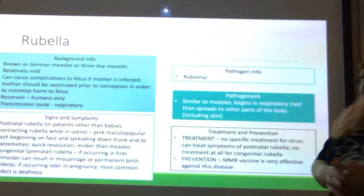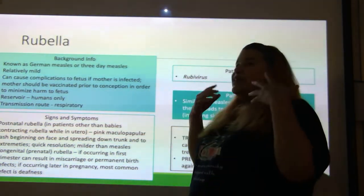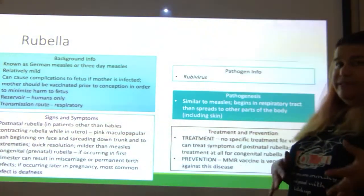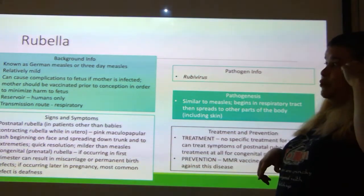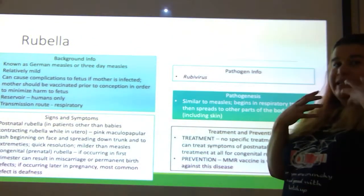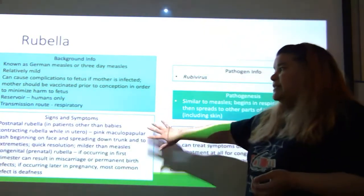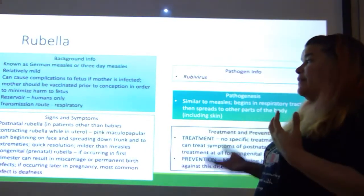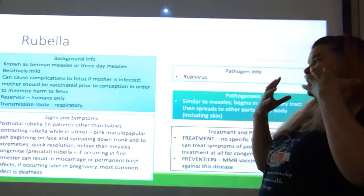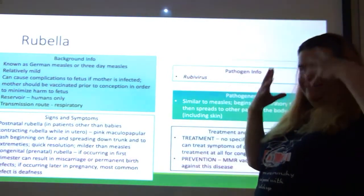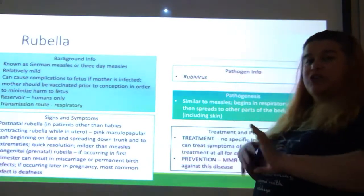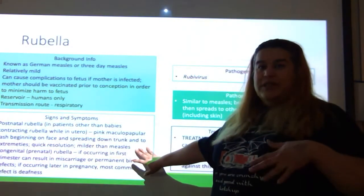Rubella — also known as German measles or three-day measles. Compared to measles, it is relatively mild. However, it can cause complications to a fetus if a mother is infected, so the mother should be vaccinated prior to conception to minimize harm. The reservoir is humans only and transmission is respiratory. Postnatal rubella produces pink maculopapular rashes beginning on the face spreading down the trunk to the extremities. It is a very quick resolution — it goes away fast — and is milder in symptomology than measles.